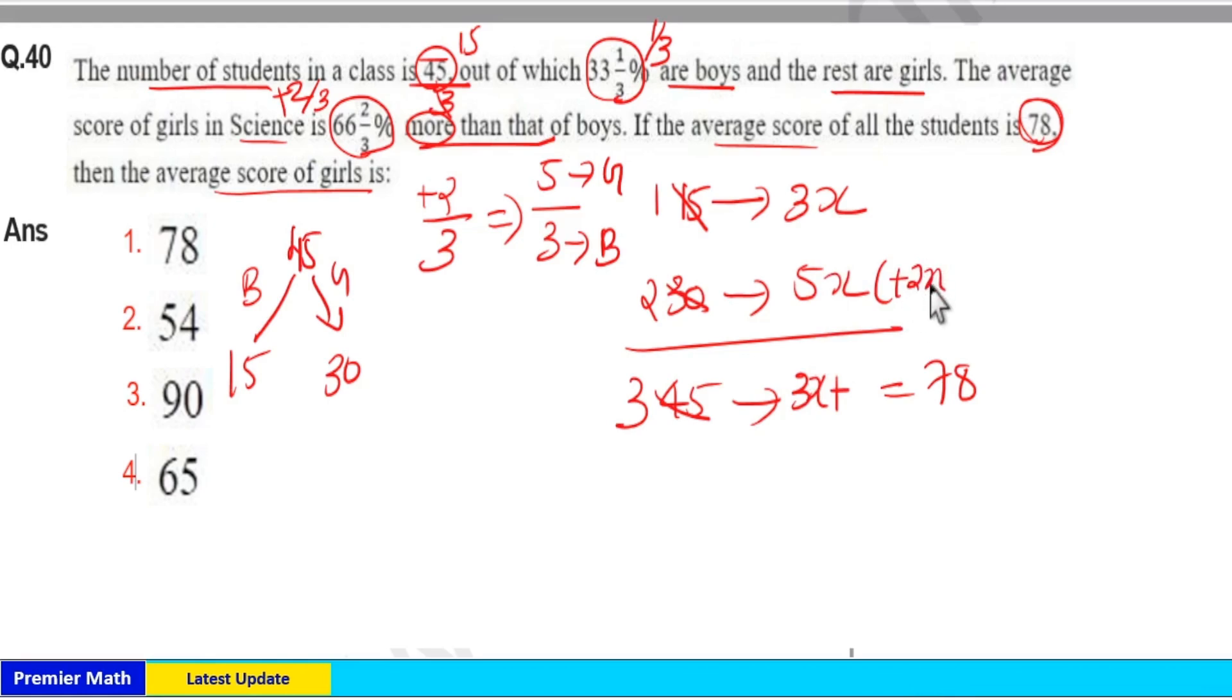And this 2x increment in average is for these 2 students. So increment in sum equals 4x. So increment in the sum, 4x, should be equally distributed to the total students.